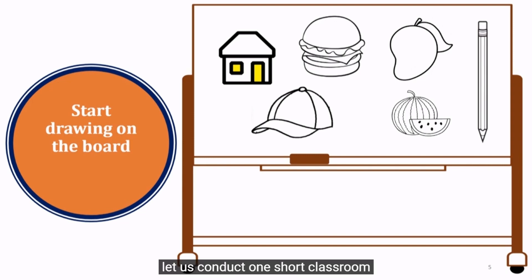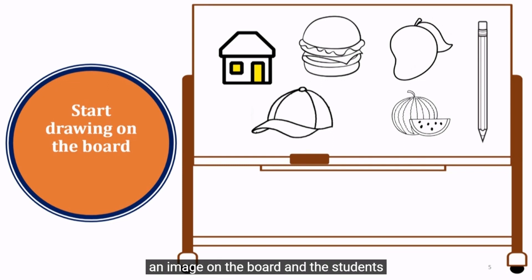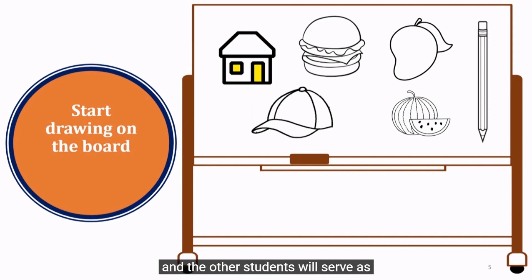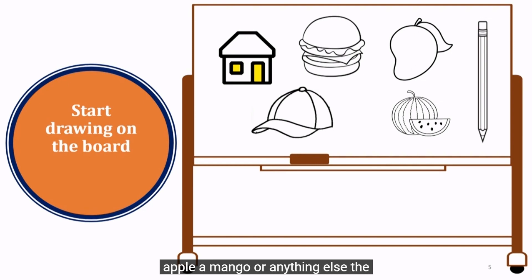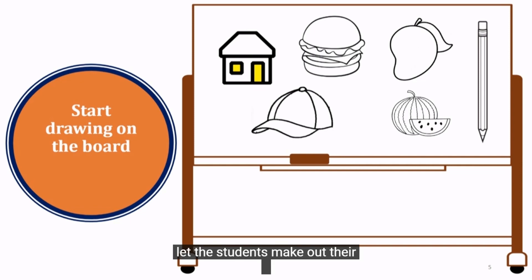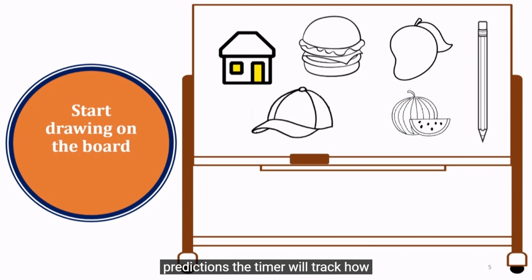Let us conduct one short classroom activity. We will start drawing an image on the board and the students will make an attempt to guess the image in 20 seconds. The timer can be set by any student and the other students will serve as guessers. We will start out by drawing some objects like a home, a cap, a pencil, an apple, a mango, or anything else. The timer will track how long it takes to accurately predict the image.